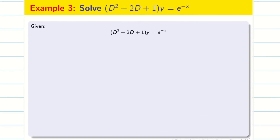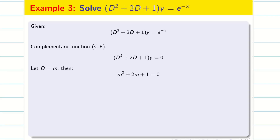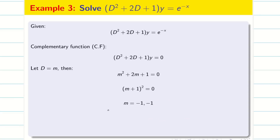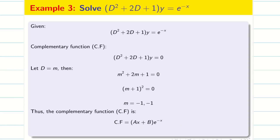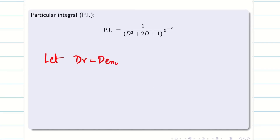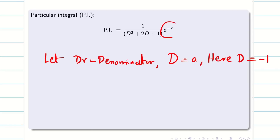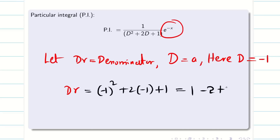Problem 3: Start by finding CF — make the equation homogeneous and find the auxiliary equation m² + 2m + 1 = 0. This factors as (m + 1)² = 0, giving repeated roots m = −1, −1. For repeated roots, CF = (Ax + B)e^(−x). Next, find PI. Let DR = denominator. With a = −1, DR = (−1)² + 2(−1) + 1 = 1 − 2 + 1 = 0.